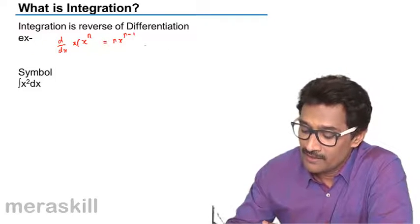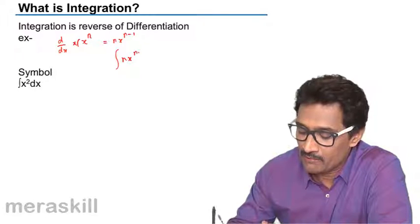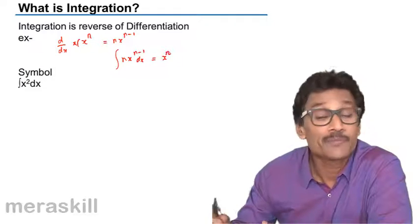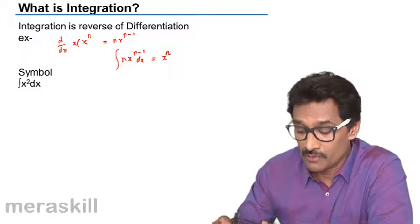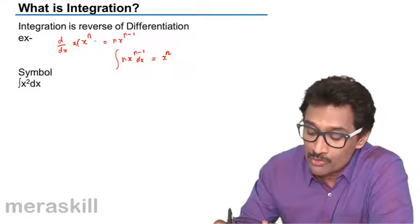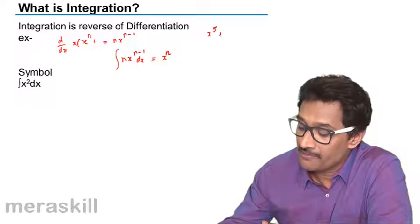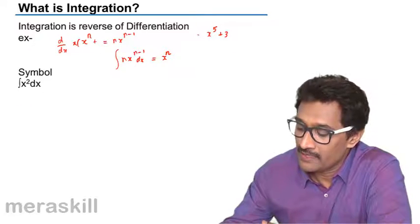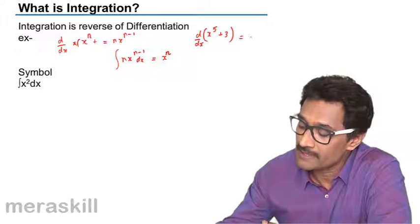So hence if you take the integral of nx raised to n minus 1, it has to be equal to x raised to n. But it's possible that this may also have a constant. Take for example x raised to 5 plus 3 as the function y. In that case, d/dx of x raised to 5 plus 3 is nothing but 5x raised to 4.